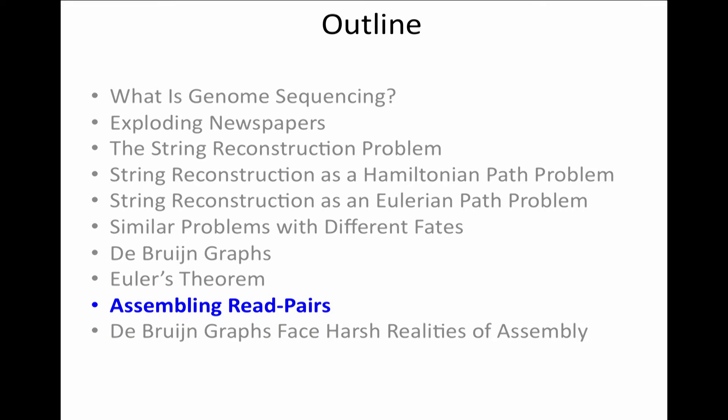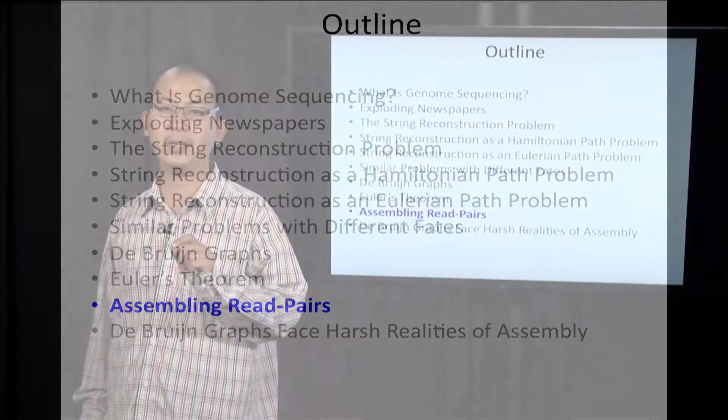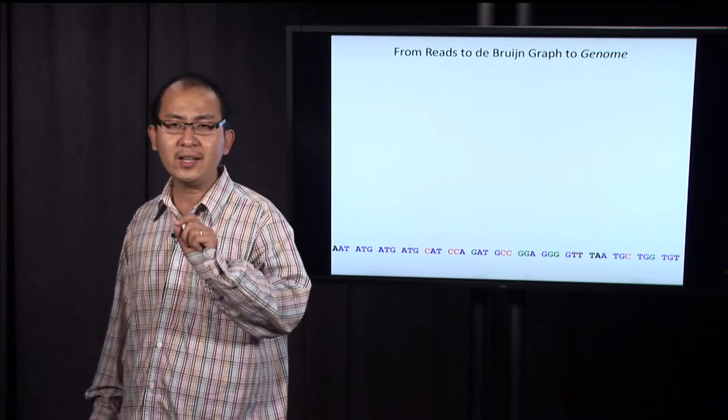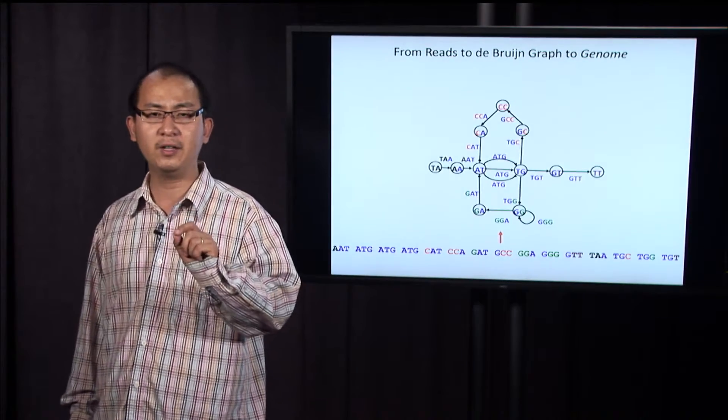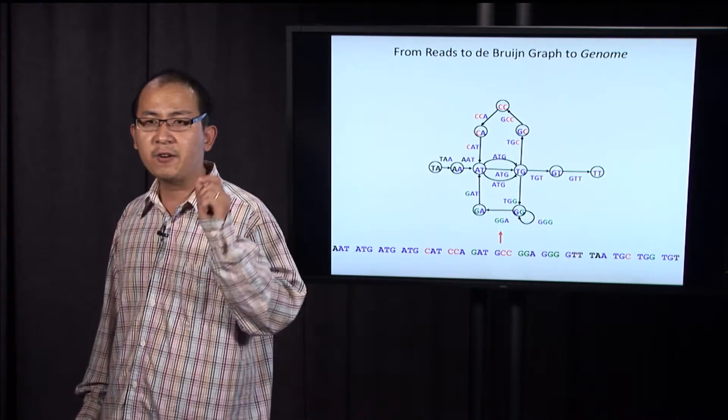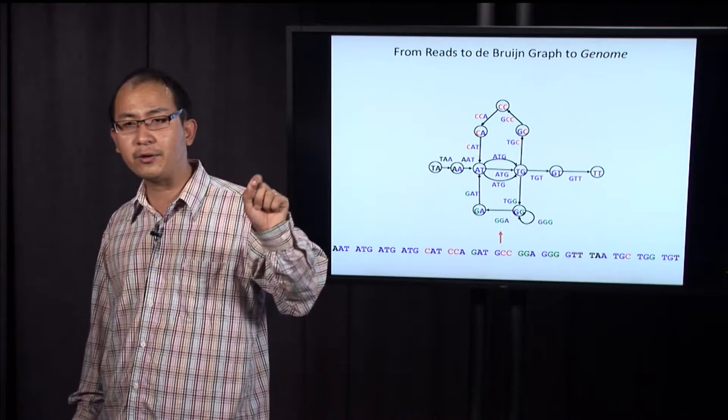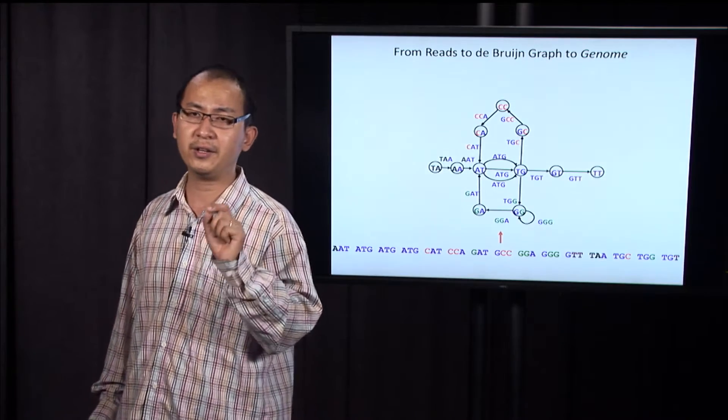So in this section, we are going to talk about genome assembly using read pairs. Pavel gave great lectures explaining how to construct the de Bruijn graph from reads and from the obtained de Bruijn graph, he explained how to find an Eulerian path in this graph to identify the genome.